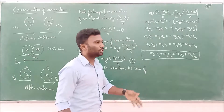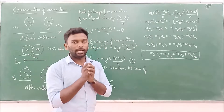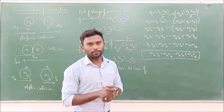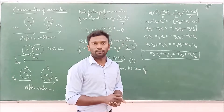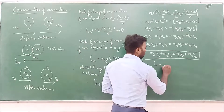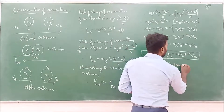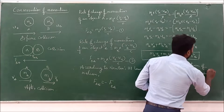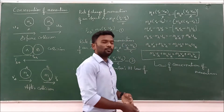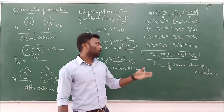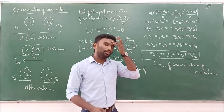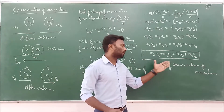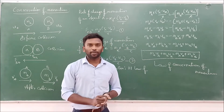Before collision and after collision, the total momentum of objects A and B are equal — it remains unchanged. No change in it. This is called the Law of Conservation of Momentum. If you take momentum before collision and after collision, you cannot find any change in that. That is the Law of Conservation of Momentum. I hope you understood that topic. Thank you very much.